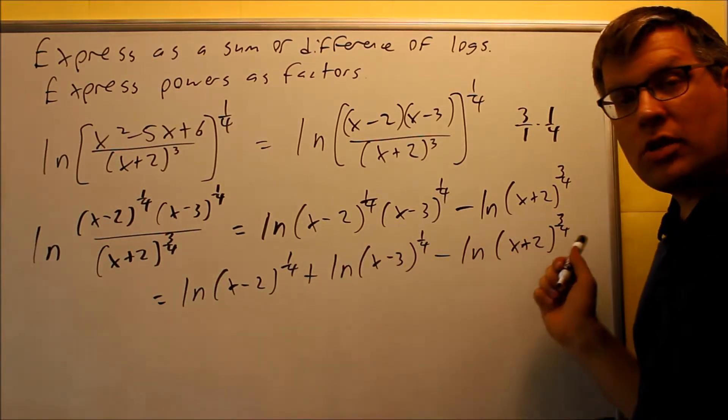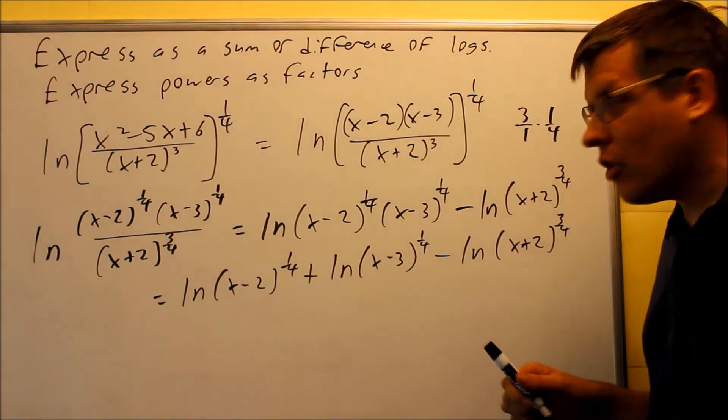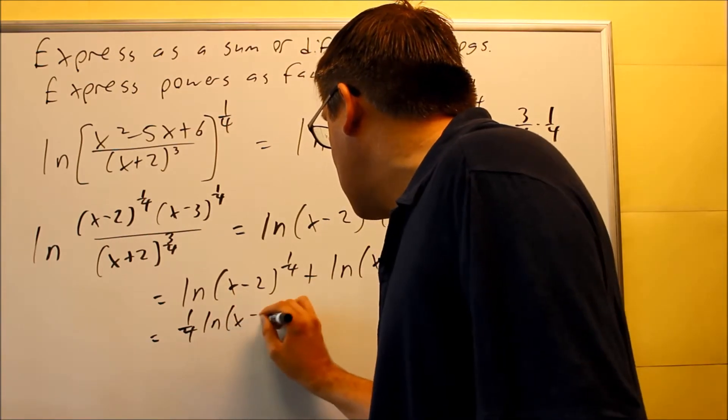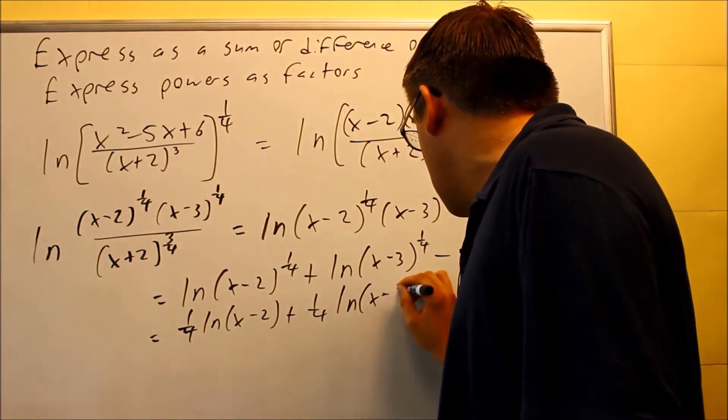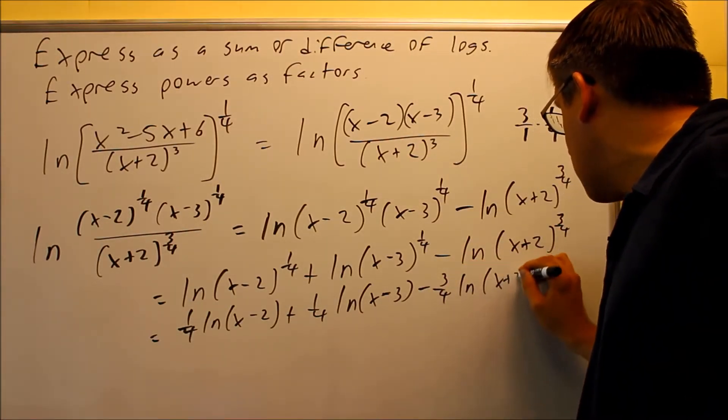Okay, so now I have it broken up down to here. The last thing is I want to express powers as factors. So I want to bring all the powers down in front. We would have one-fourth ln x minus two, one-fourth ln x minus three, and then minus three-fourths ln x plus two.